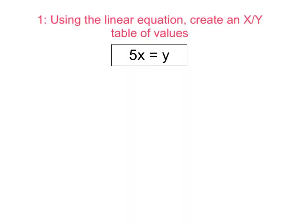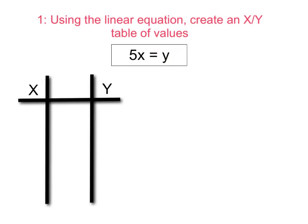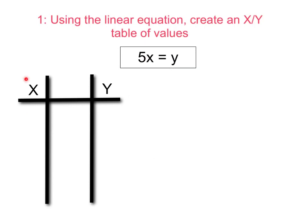The first thing we need to do is to use the linear equation to create an xy table of values. We have a linear equation right here: 5x is equal to y, and we're going to use that to help us create an xy table of values. We need to remember that our x is our independent variable and our y is our dependent variable, since y depends on all the values of x. That is how we are going to create the table.